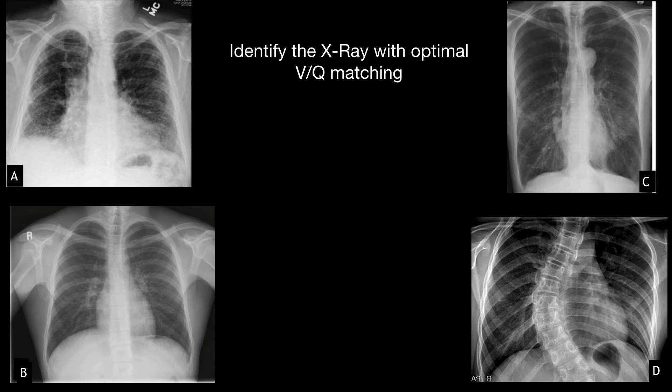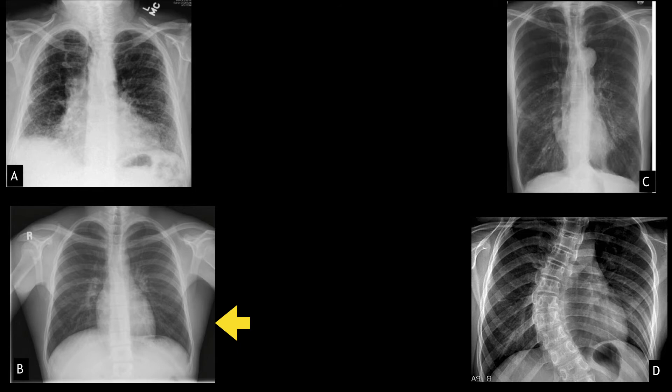I want you to look at all four of these X-rays and identify the X-ray which has optimal VQ matching. It's this X-ray — this is a normal X-ray, which represents normal functional residual capacity.